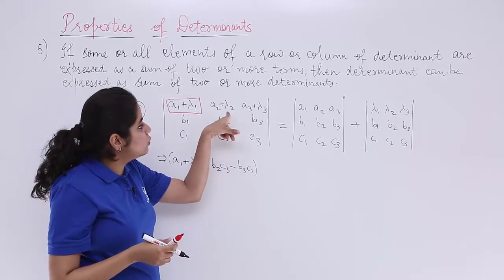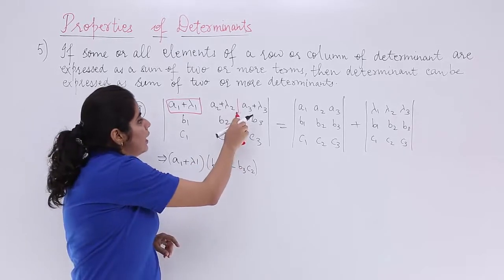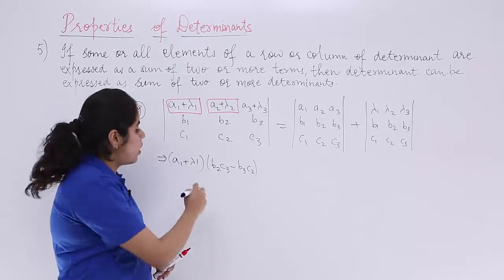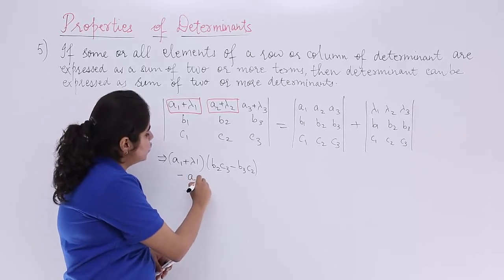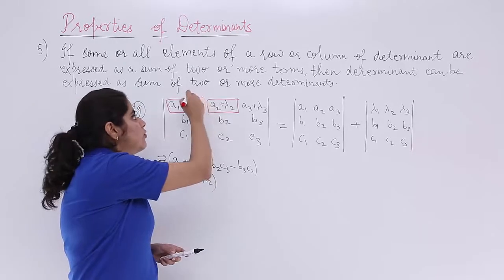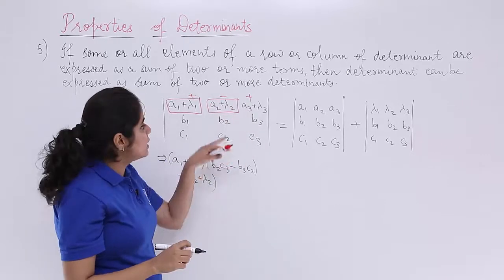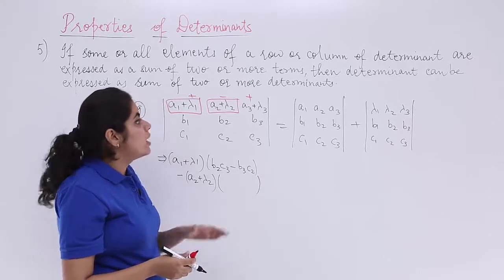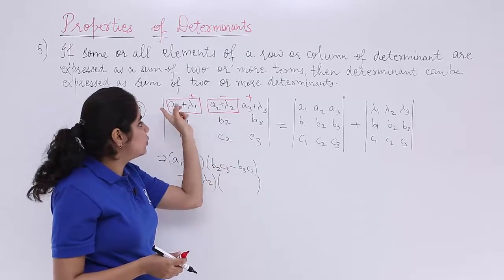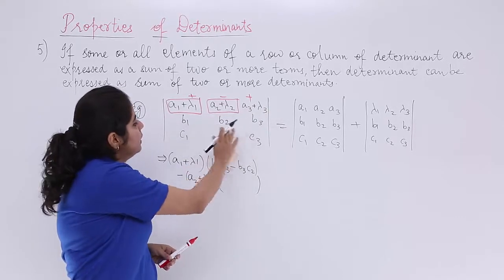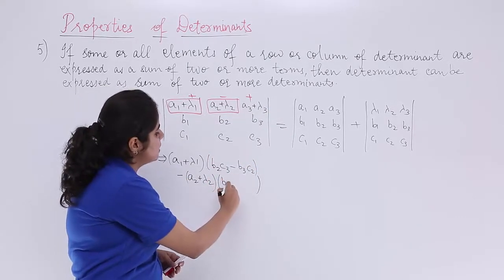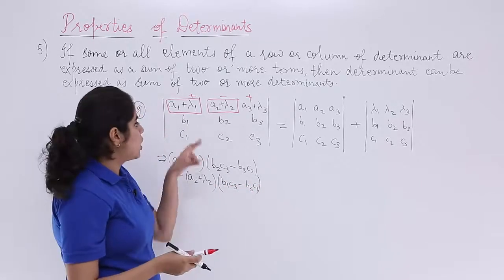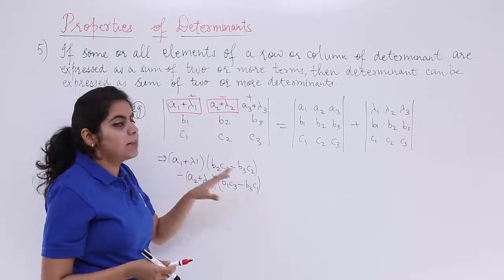When we take the second element while expanding along the first row, we follow the plus-minus-plus sign pattern, so it is minus (a2 plus lambda2). Ignoring the first row and second column, we are left with b1, b3, c1, c3, which cross-multiplies to give b1·c3 minus b3·c1.